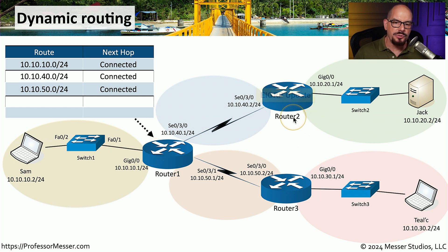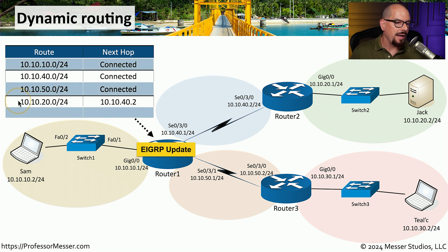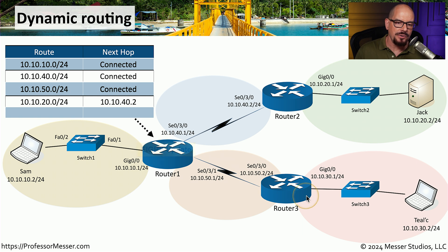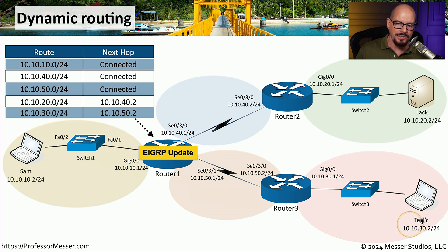One way to do this would be to have router 2 send a routing update via EIGRP to router 1. Router 1 receives that update and then updates its own routing table with a new route to 10.10.20.0/24, and the way to get to that network is to go to 10.10.40.2. We also have another EIGRP update that has come from router 3, and when that update is received, router 1 identifies a new route to 10.10.30.0 — the subnet at the bottom — with a next hop of 10.10.50.2.